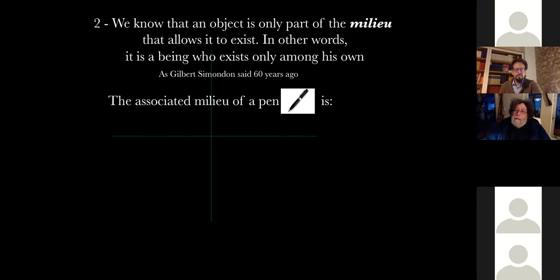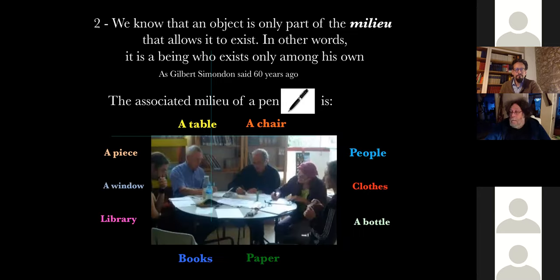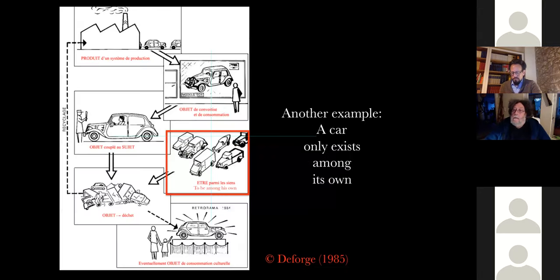Second, we know that an object is only a part of the milieu that allows it to exist. In other words, it is a being who exists only among his own, as Gilbert Simondon says. The associate milieu of a pen, for example, is a table, a chair, people, clothes, bottles, paper, books, library, window, a lot of things.